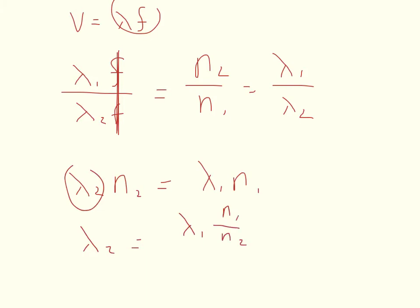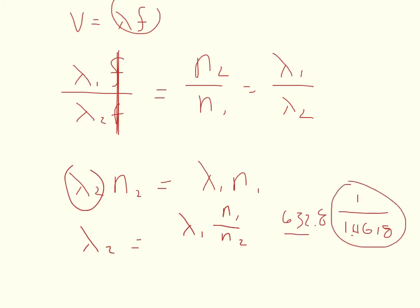It tells us that lambda 1 is 632.8 nanometers. N1 in a vacuum is 1, divided by N2 — the corn syrup and water mixture. We'll use the index of refraction found in part one: 1.4618. This fraction is slightly less than one, so the new wavelength should be slightly less than that of the original. The second wavelength, lambda 2, is equal to 432.87 nanometers.